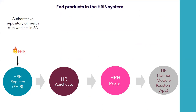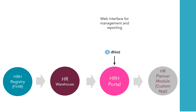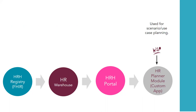The HRIS system has four components: first, a FHIR registry using the HAPI server, where all healthcare worker records are stored. Second, DHIS2 is used as the data warehouse. Third, the HRIS portal is a DHIS2 app installed on the DHIS2 instance. Fourth, the HRH planner module — starting with a basic version and moving into machine learning as more data is gathered to enable predictions.